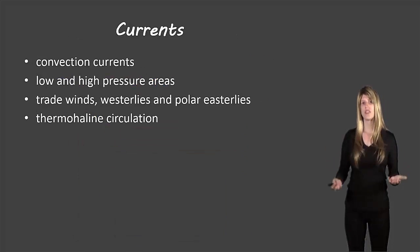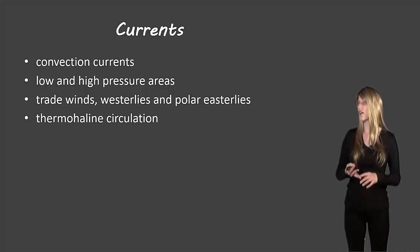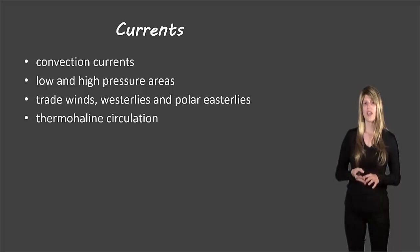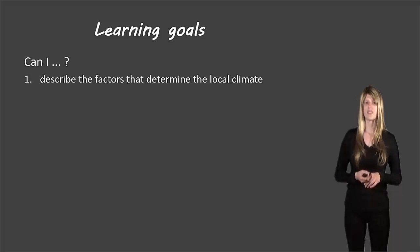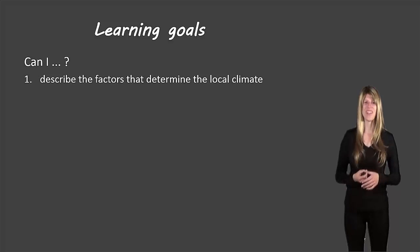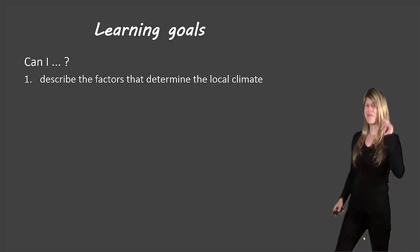Finally, currents — we've already covered these, so check out the link in the description below. Things like convection currents, high and low pressure areas, trade winds, westerlies, polar easterlies, and thermohaline circulation will all affect local climate as well. So revisiting our learning goal: you should be able to describe the factors that determine local climate. If you can do that, fantastic. If not, please re-watch the video, and if you're still having trouble come ask me in class tomorrow. That's all for now — bye bye!